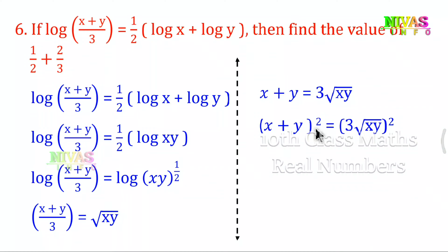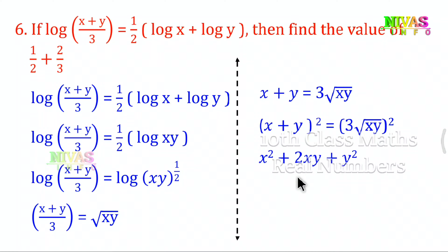Now we apply the A plus B whole square formula. A plus B whole square gives us A squared plus 2AB plus B squared. So (x plus y) squared equals x squared plus 2xy plus y squared. On the right side, the root will cancel and we get 3 squared, which is 9, multiplied by xy.